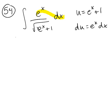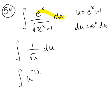And so this is just going to be the antiderivative of 1 over the square root of u du, which is just the antiderivative of u to the negative 1 half du.